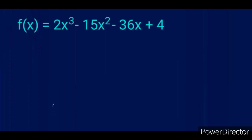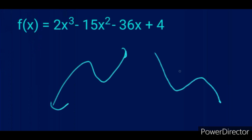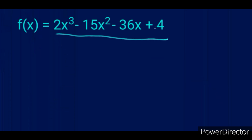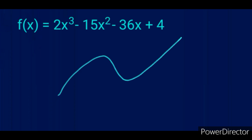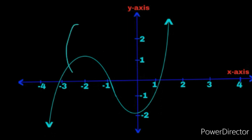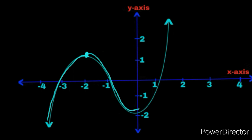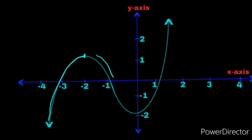The shape of the cubic graph is either this way or this way. Let's look at this particular cubic graph. Where is it increasing? When you follow the graph from left to right, you will notice that your finger is going up — meaning it's increasing — but only up to the first turning point. It starts going down from that point, decreasing until another turning point. So the graph is increasing up to the first turning point, decreases between the two turning points, then after the next turning point, it starts increasing again.